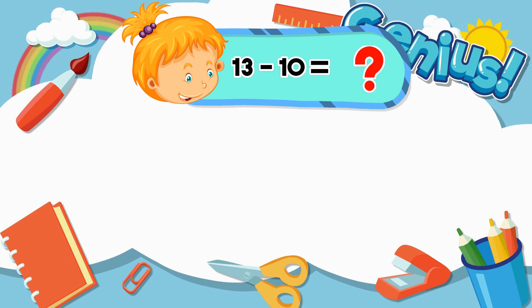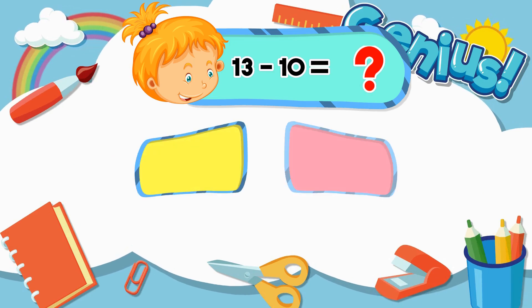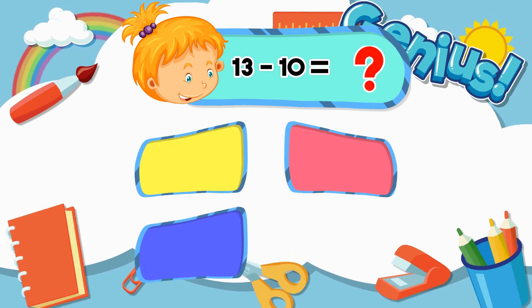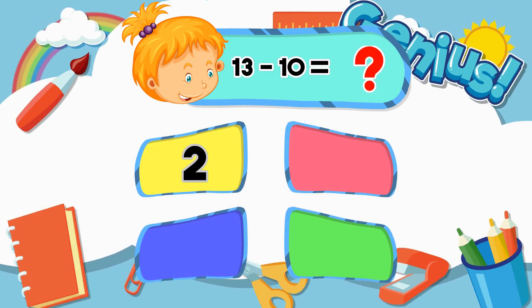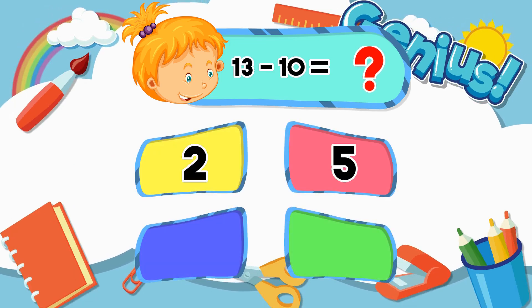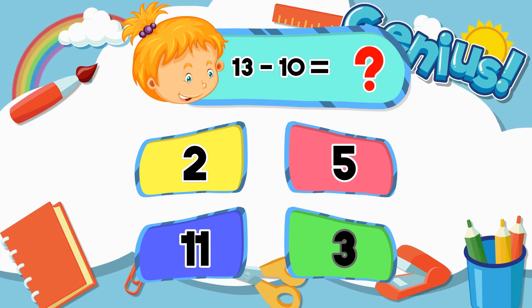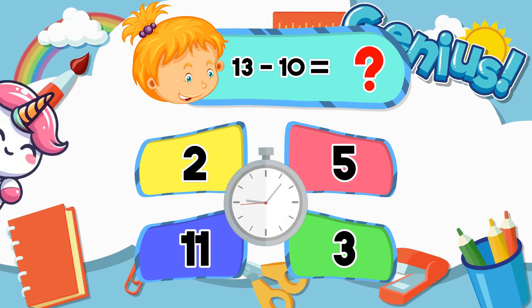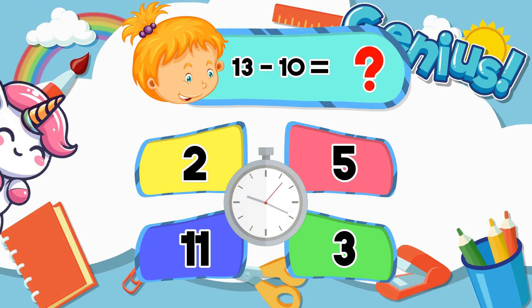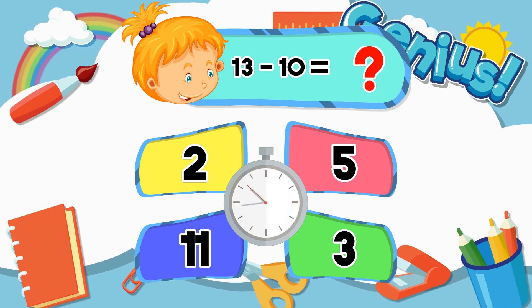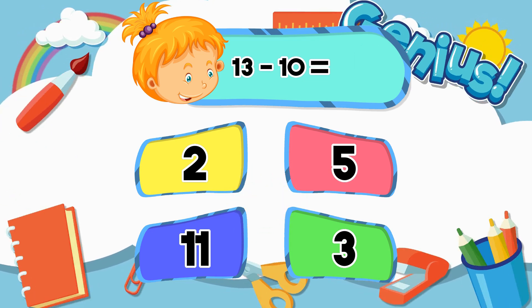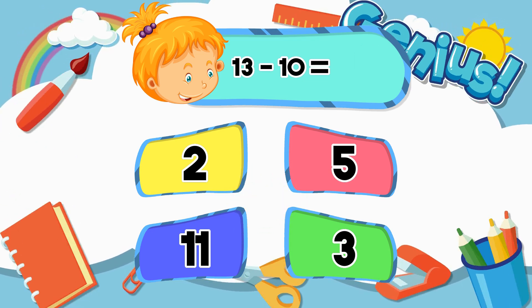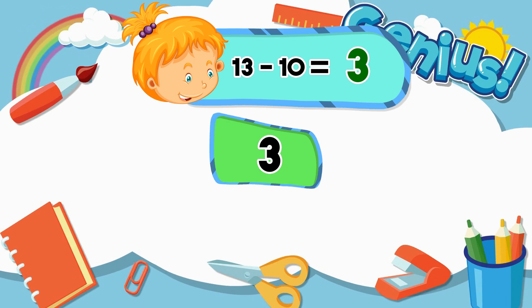What is thirteen minus ten? Two. Five. Eleven. Three. Three.